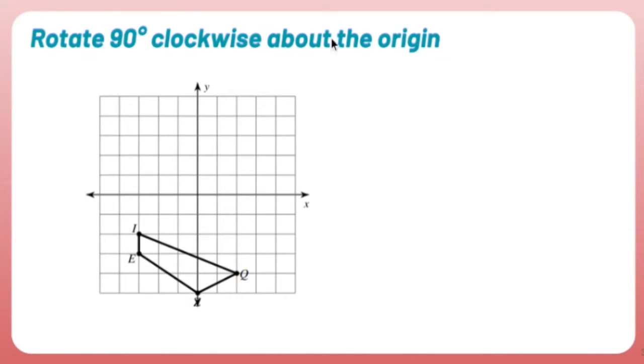Rotate 90 degrees clockwise about the origin. Rotate means we're spinning things around. In this case, we're spinning it around clockwise, which goes like a regular clock.